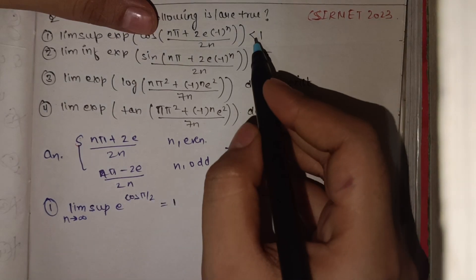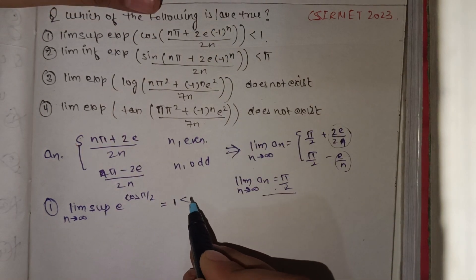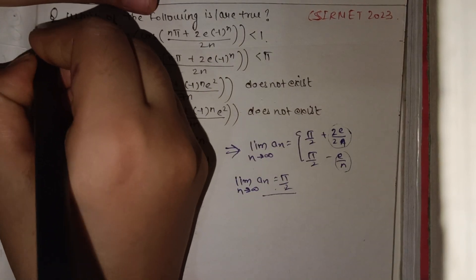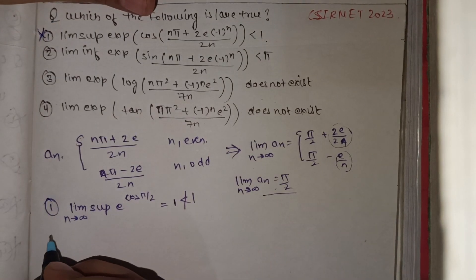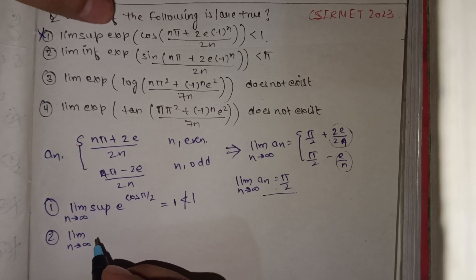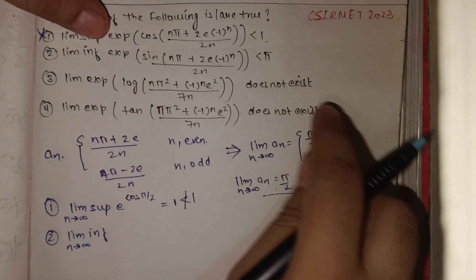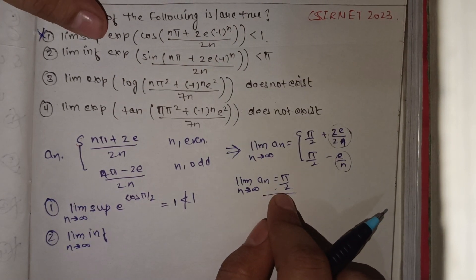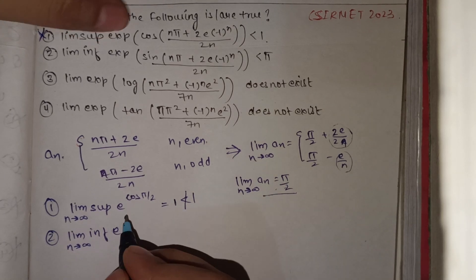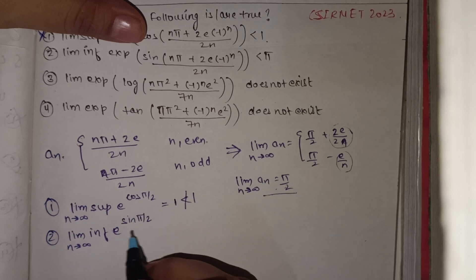Option 1 states this limit is less than 1, but we got it equals 1 — so option 1 is incorrect. Now for option 2, the limit infimum is asked. But since both the infimum and supremum of the inner value are the same, we apply the same limit. We evaluate e^(sin(π/2)).